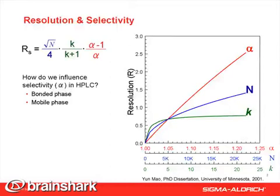Looking at the resolution equation shown here tells us why. The graph plots resolution versus three different terms. Of the three parameters, selectivity — alpha — has the greatest effect on resolution, and its effect does not limit as do the effects of efficiency and retention.